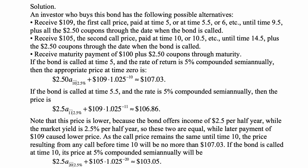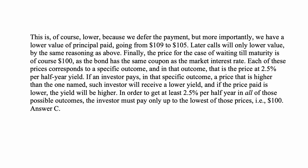If the bond is called at time 10, its price at 5% compounded semi-annually will be 2.5 times a-angle-20 at 2.5%, plus 105 — it's no longer 109, it's now 105 — times 1.025 to a negative 20, which is approximately $103.05. This is lower because we defer the payment, but more importantly, we have a lower value of principal paid, going from 109 to 105.